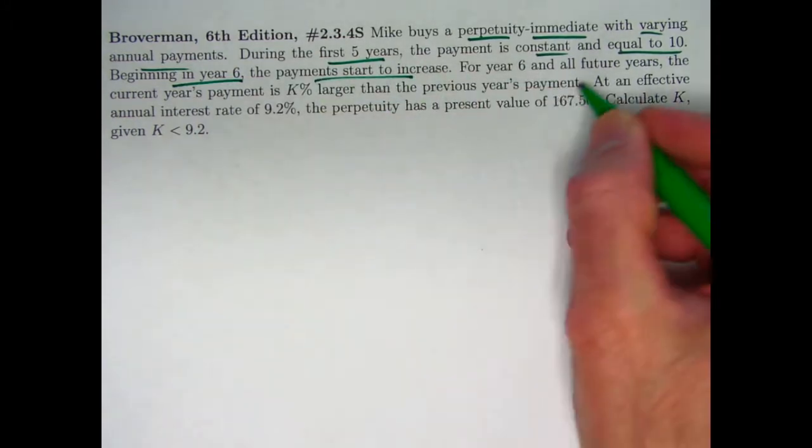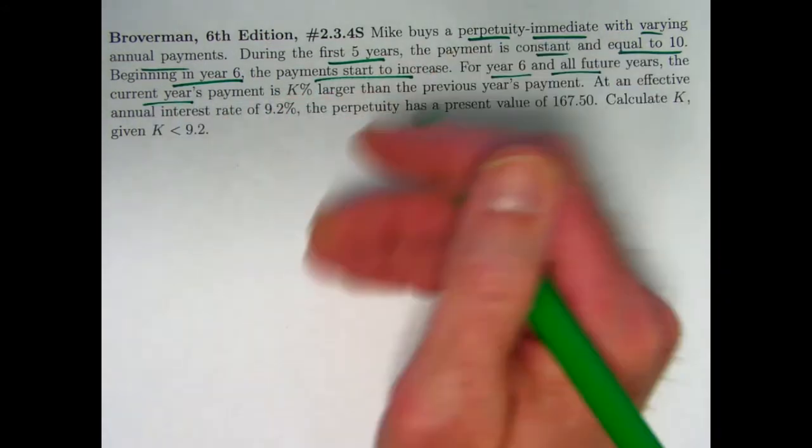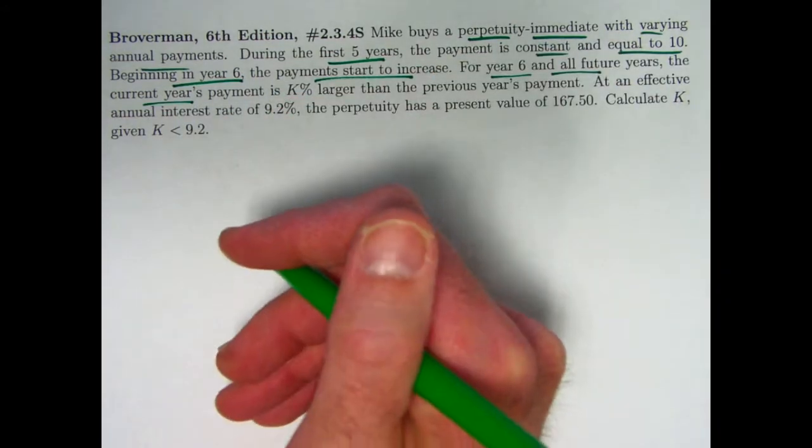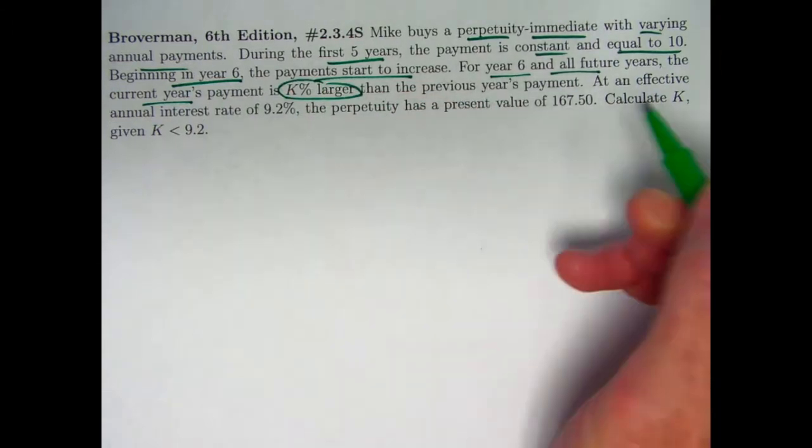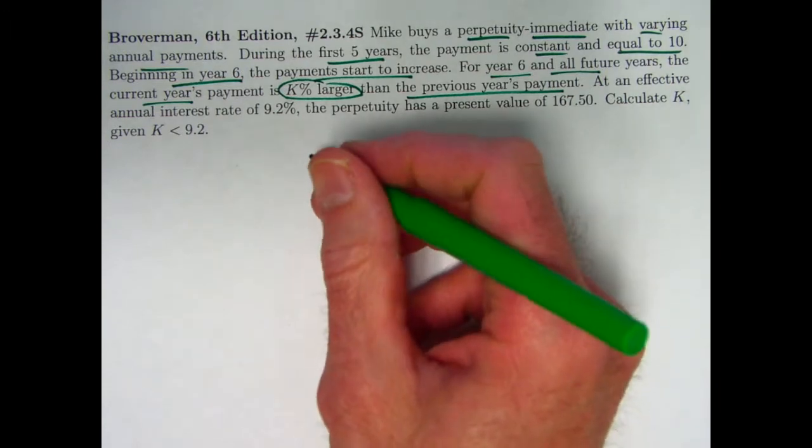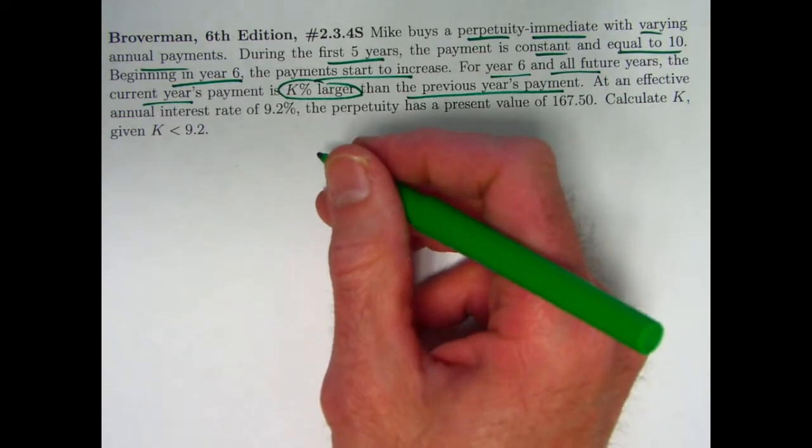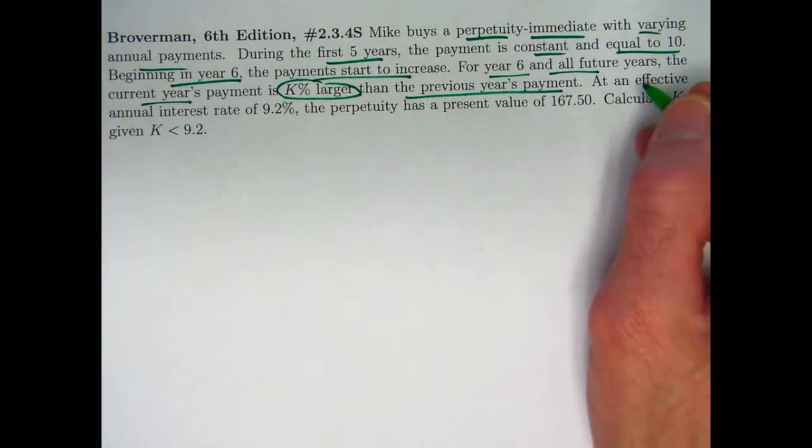the payments start to increase. For year six and all future years, the current year's payment is adjusted because of inflation. It doesn't say inflation, but that would be the practical application. It's K percent larger than the previous year's payment. A little bit of wrinkle here, K is given as a percentage, so for example, if we get an answer of K equals six, that represents six percent, 0.06 as a decimal, but the answer itself would be six.